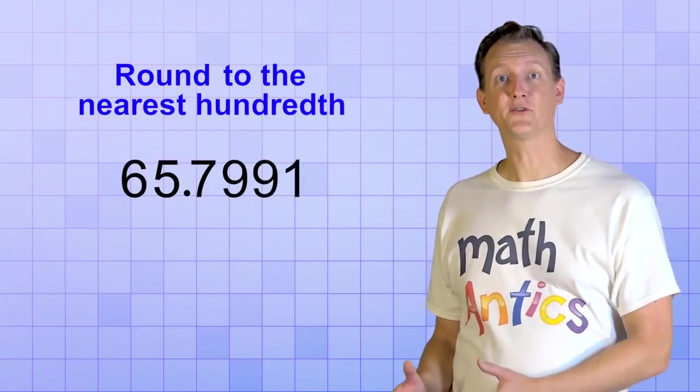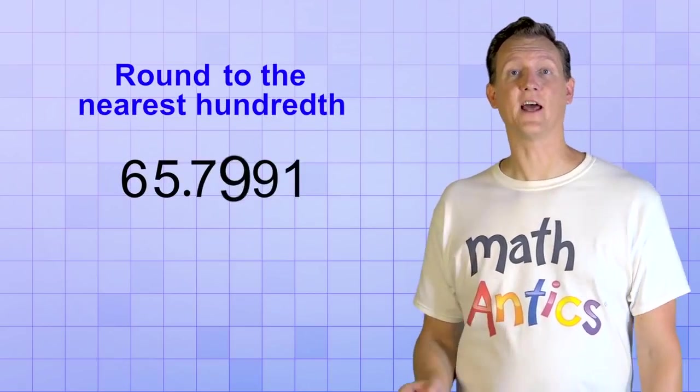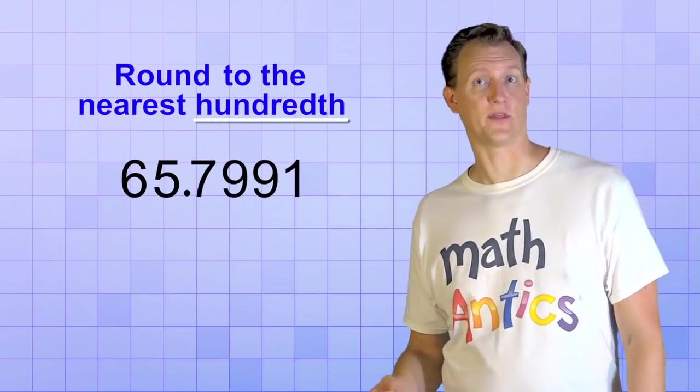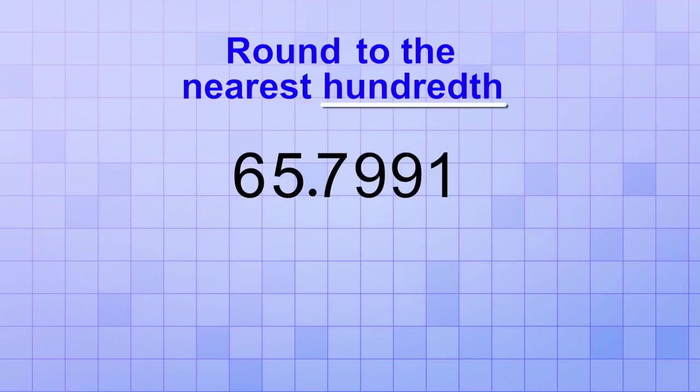Ready for one more? Let's round 65.7991 to the nearest hundredth. The first step is to identify the hundredths place as our target. That place contains the digit 9. All the digits in smaller number places will just be replaced with 0 in the rounded version.